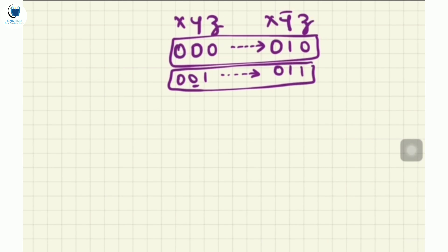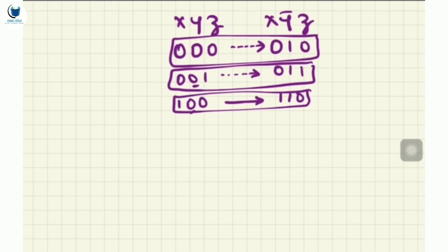Continuing: 100 pairs with 110 — that is (m4, m6). And 101 pairs with 111 — that is (m5, m7). So we have exactly four pairs: {m0,m2}, {m1,m3}, {m4,m6}, {m5,m7}. These are the four boxes.